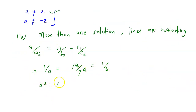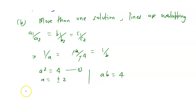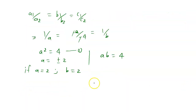From the first equation, the negatives cancel and we get a squared equals 4. So a has two values by the square root property: plus or minus 2. Now for b: b must equal 4 divided by... so if a equals 2, then b equals 2, and if a equals minus 2, then b equals minus 2.